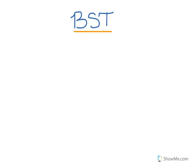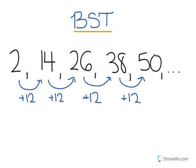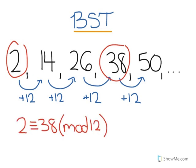If there were more than 24 hours in a day, we would find more digits that are congruent to 2 modulo 12. All of these numbers are congruent to each other modulo 12, because the difference between them is divisible by 12. So 2 and 38 are congruent modulo 12 — and that's how it's written using the congruence sign. The difference between them is 36, and 12 goes into that with no remainder.